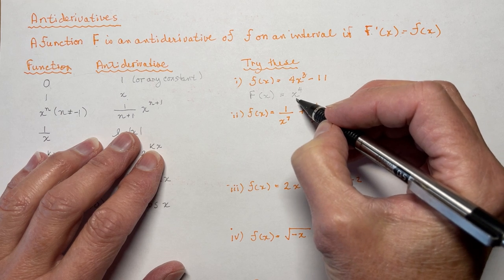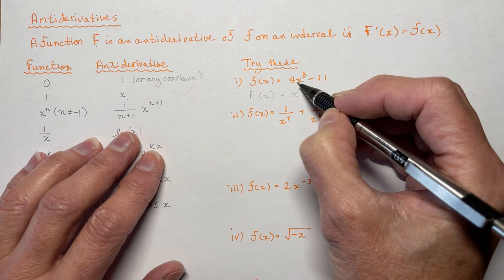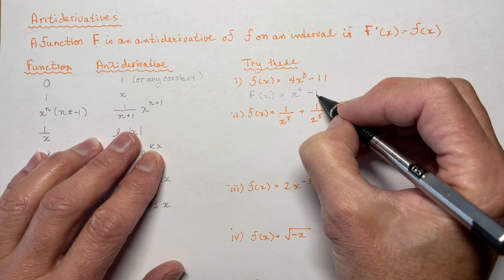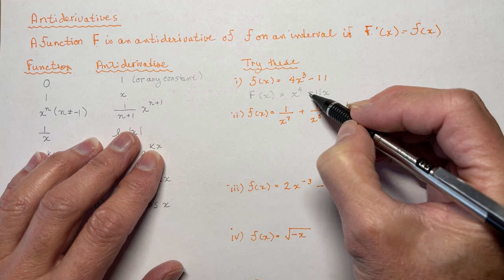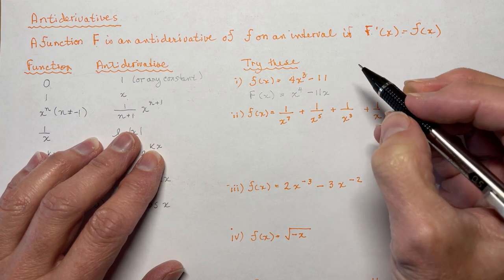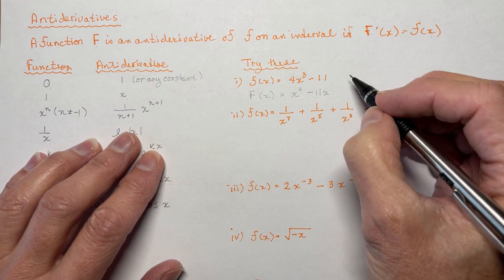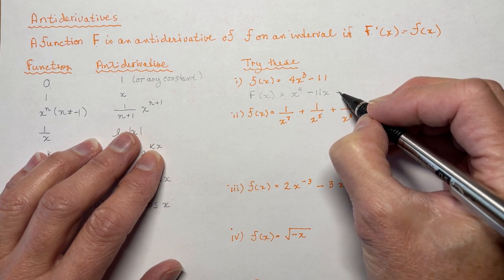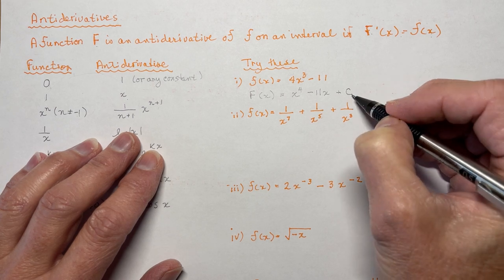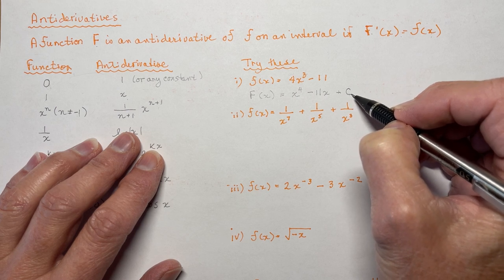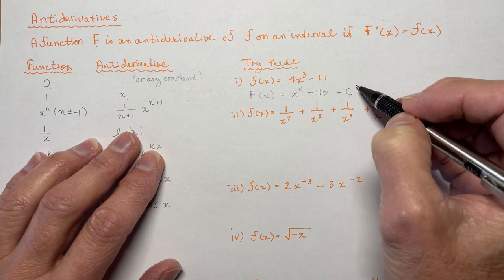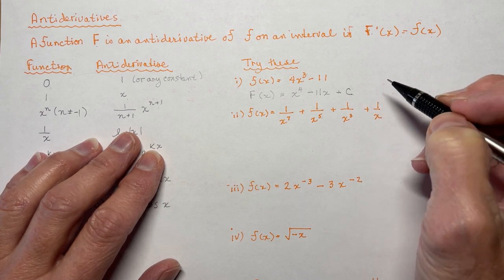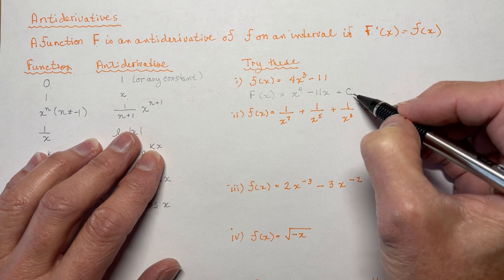Continuing that example: minus 11 is a constant, so its antiderivative would have an x after it, because the derivative of minus 11x is minus 11. Now, there's one other thing you have to include: the antiderivative could be many things with some constant value at the end, which we call C. I don't know what this constant is — in the next lesson we'll use initial conditions to evaluate it. So for all antiderivatives you do, you will always write plus C.